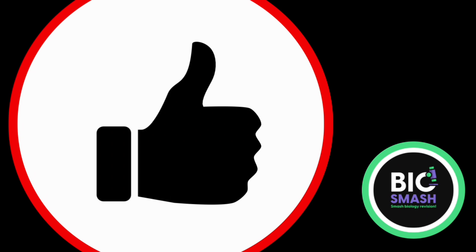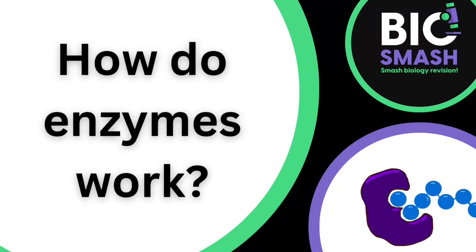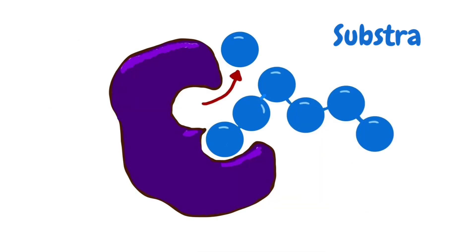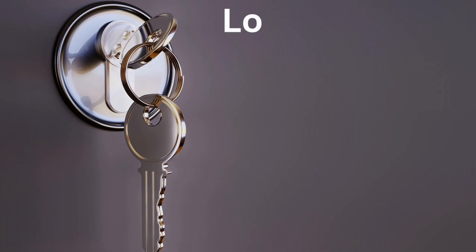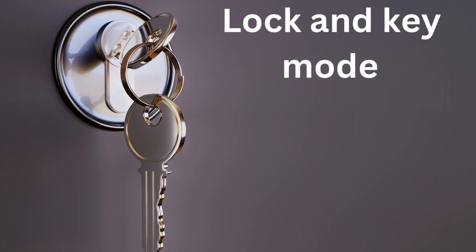Let's look at how enzymes work. We often call the molecule that fits into an enzyme a substrate. The part of the enzyme that the molecule fits into is called the active site. You can see that the shape of the active site fits really well around the shape of the substrate, just like your key fits really well into your lock and just your lock. This is called the lock and key model.